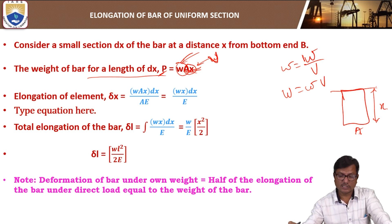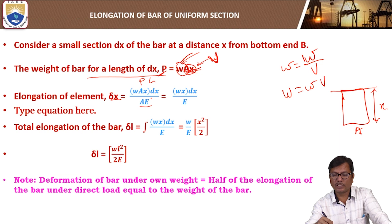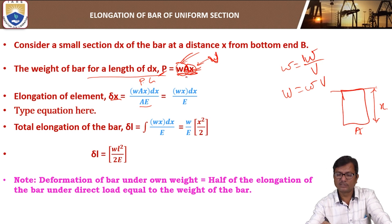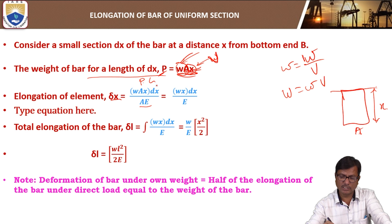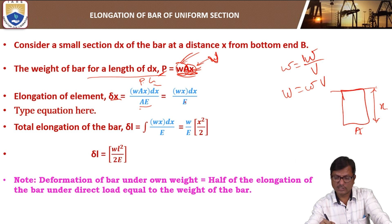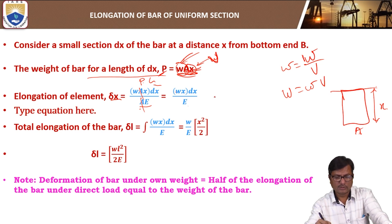Due to this, the elongation of the element is given as δx = P·L / (A·E), where P is the weight of the bar below the section, which is w·A·x, and the length of the element is dx. So δx = w·A·x·dx / (A·E). Since A is constant and E is also constant, A cancels out, giving δx = w·x·dx / E. The total elongation of the bar is obtained by integrating this — by summing up the elongations of all such elements from the bottom end to the top end.